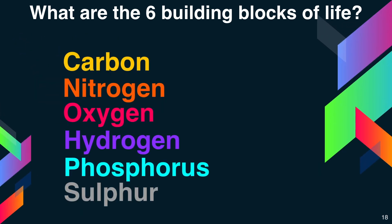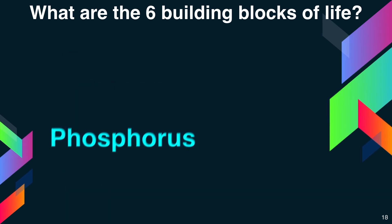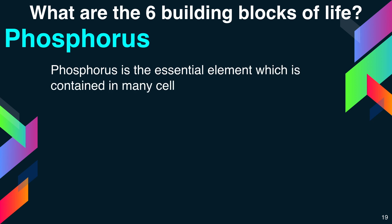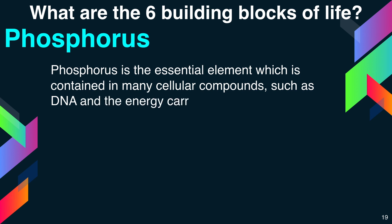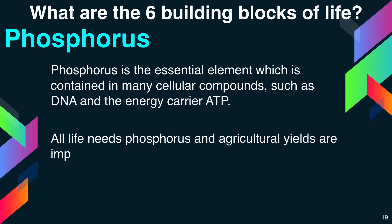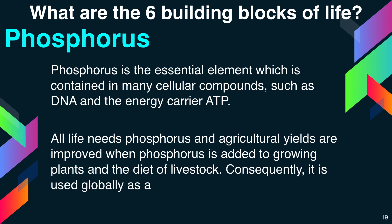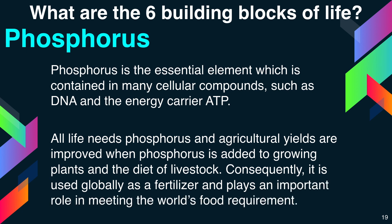Coming to the next element: phosphorus. Phosphorus is an essential element contained in many cellular compounds such as DNA and the energy carrier ATP — adenosine triphosphate. All life needs phosphorus, and agricultural yields are improved when phosphorus is added to growing plants and the diet of livestock. Consequently, it is used globally as a fertilizer and plays an important role in meeting the world's food requirements.